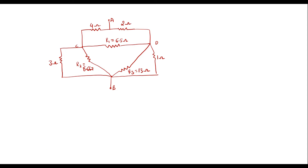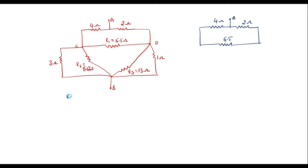Now from this circuit we can observe that 3 ohm and 8.667 ohm are in parallel, and 13 ohm and 1 ohm are in parallel. Let me reduce the circuit further. With 4 ohm, 2 ohm, and terminal A as before, 6.5 ohm remains as is. The parallel combination of 3 and 8.667 = (3 × 8.667) / (3 + 8.667) = 2.228 ohm.